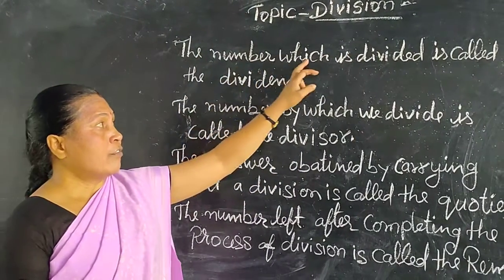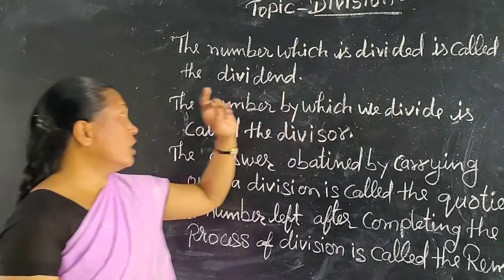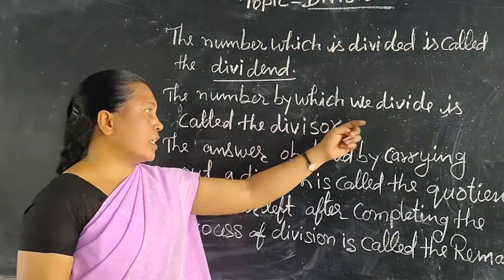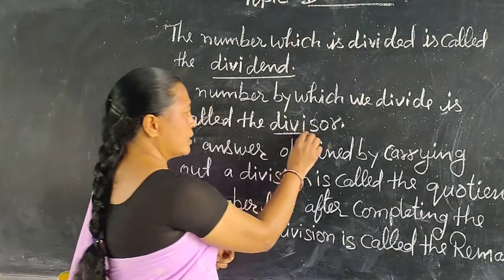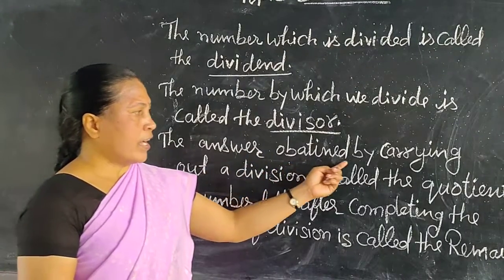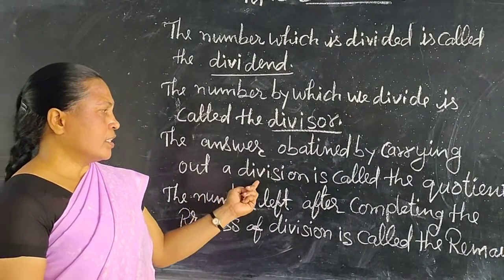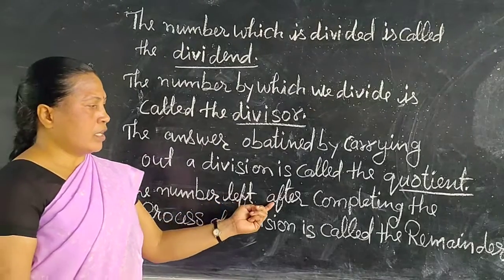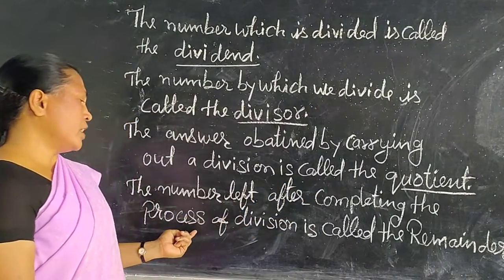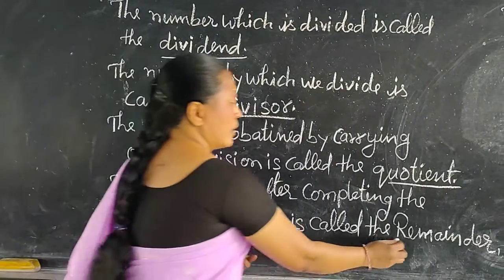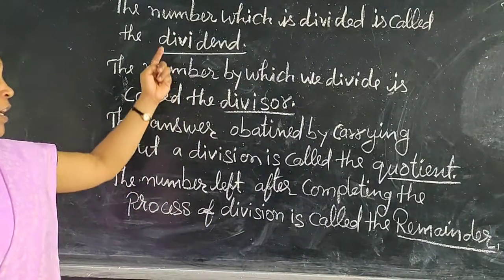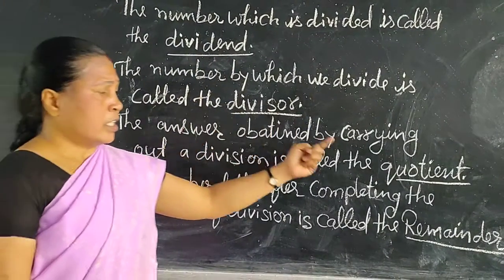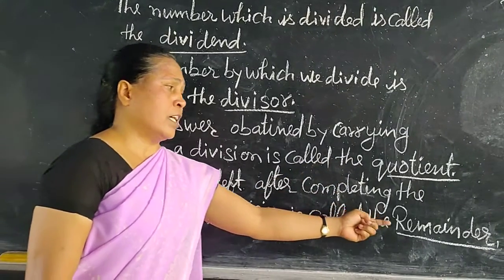The number which is divided is called the dividend. The number by which we divide is called the divisor. The answer obtained by the division is called the quotient. The number left after completing the process of division is called the remainder. So, we remember: what is dividend, what is divisor, what is quotient, and what is the remainder.